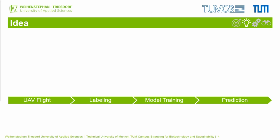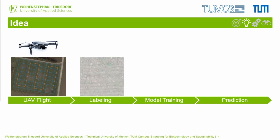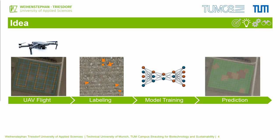The main idea can be divided into 4 steps. First, a consumer-grade drone is taken to capture images of a field. Then the images are labeled to provide some ground truth. Next, several deep learning models are trained. Finally, the model can be used to predict and automatically detect weeds in new drone images.